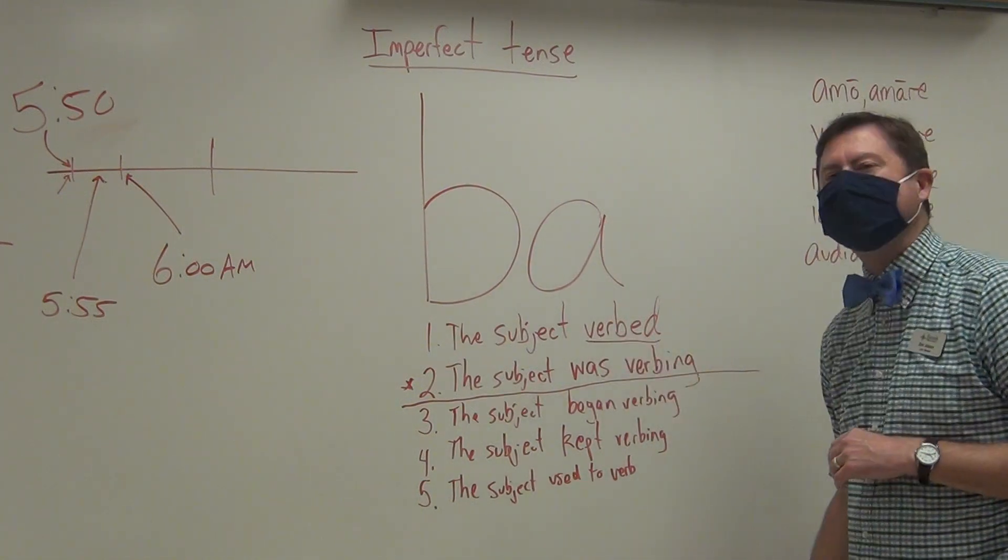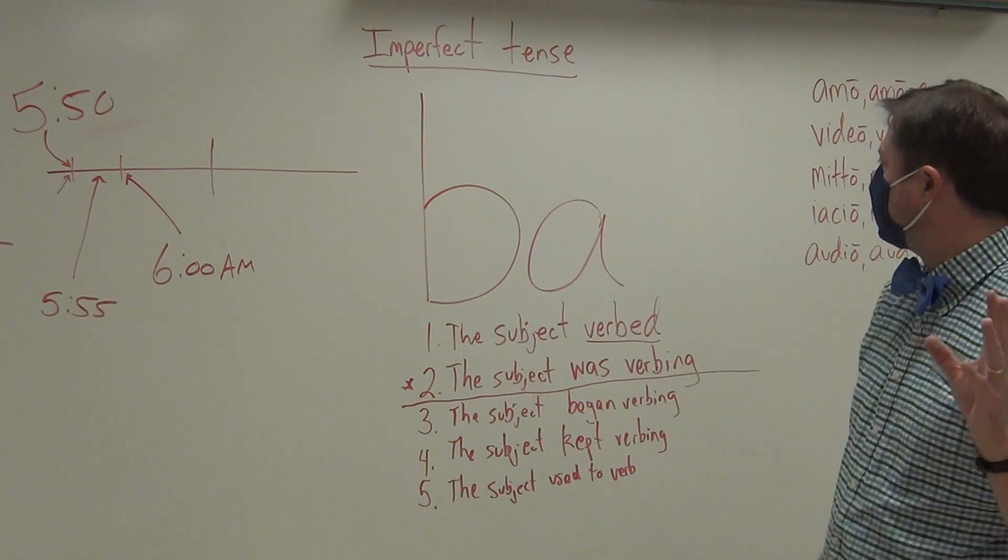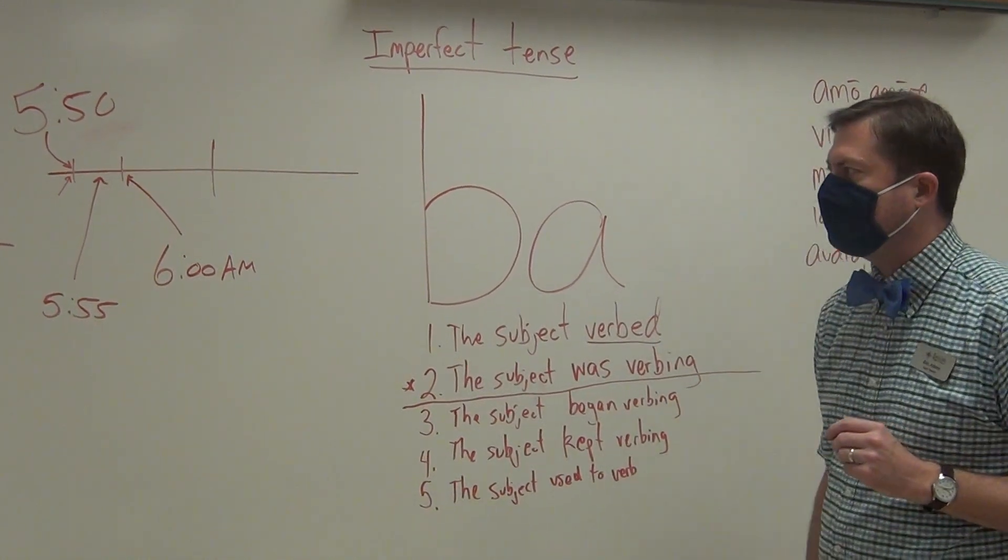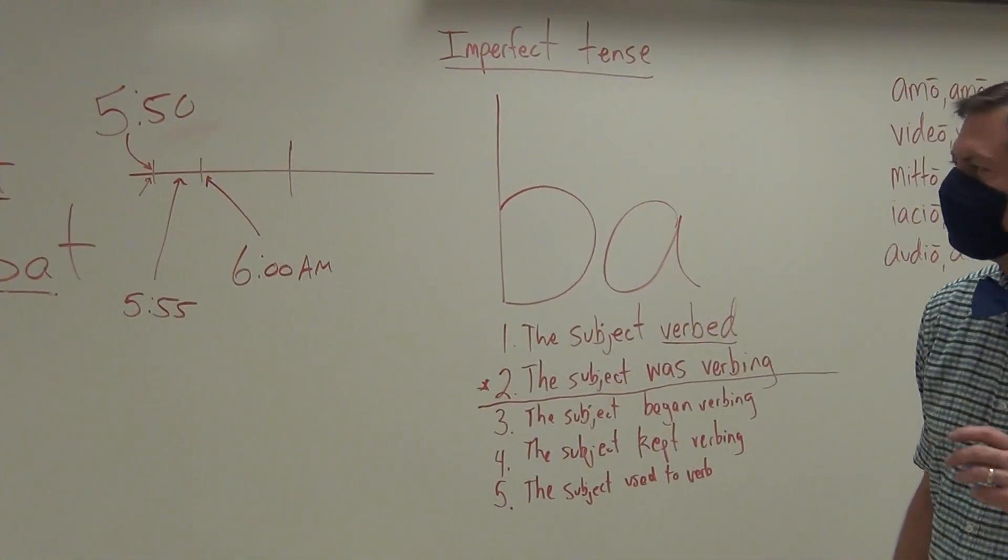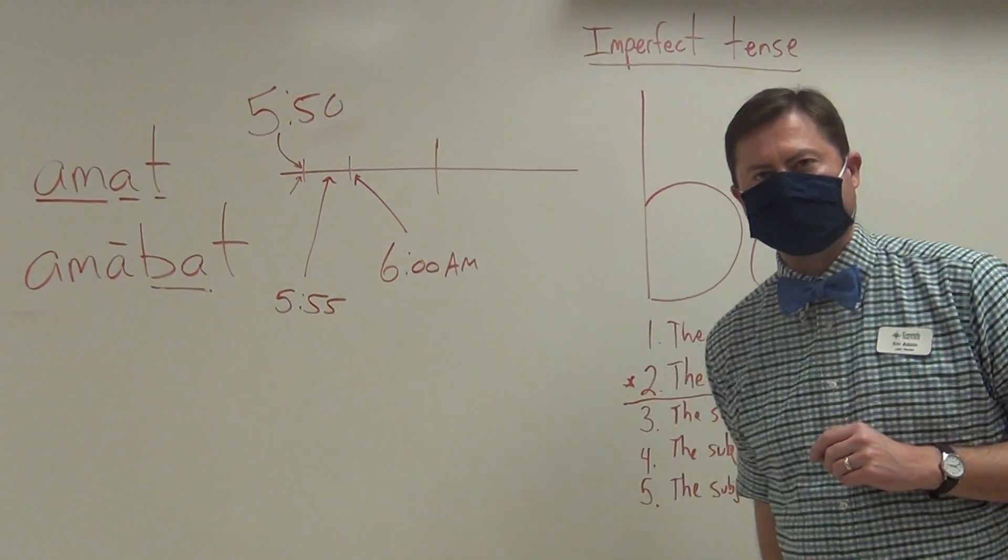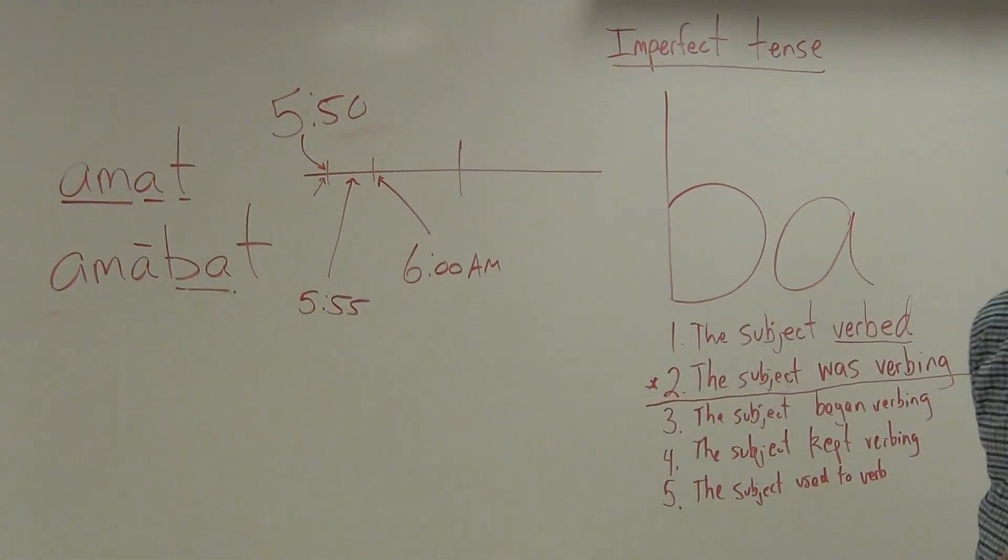Your final expression: simply verbed, V-E-R-B-E-D. So, nevertheless, that's the imperfect. In the next video, hopefully you'll watch it right after this one, I'll go over specifically how to form it. But the most important part, BA. Thanks.